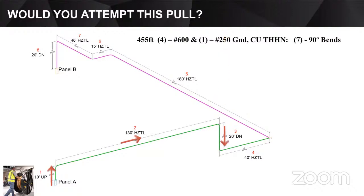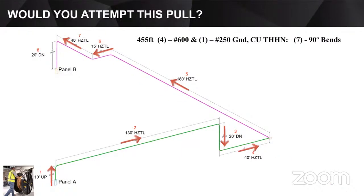Next, in segment three, we drop back down 20 feet to a 90-degree elbow. In segment four, we turn back in the horizontal direction and travel 40 feet to a 90-degree elbow. We make a left turn horizontally again and travel 180 feet in segment five to a 90-degree elbow. Segment six, we make another left turn and travel 15 feet to a 90-degree elbow. Segment seven, we travel 40 feet horizontally to an elbow. And our last segment, segment eight, we drop straight down 20 feet to the top of Panel B that we're feeding, where our wire puller would be set up.